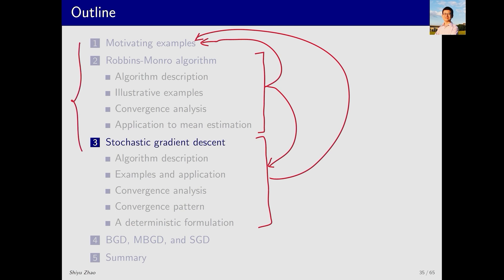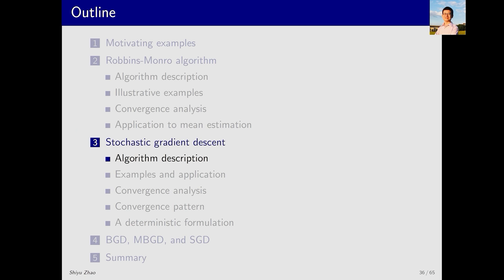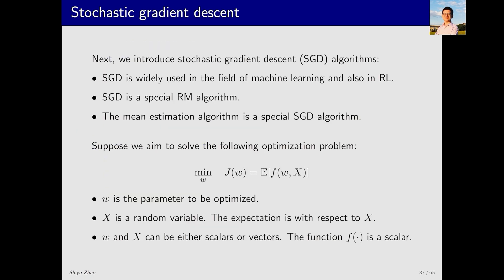In addition, the mean estimation algorithm is a special case of SGD, so the three parts are closely related. Now let's consider what exactly the SGD algorithm is and the problem it aims to solve. It addresses an optimization problem — specifically, it aims to minimize an objective function J, which is a function of W. Here W can be a parameter or a variable. The objective function includes an expectation over a random variable X: it is the expectation of a function F, which is a function of W and X. The expectation is taken with respect to X, and we do not know the probability distribution of X.